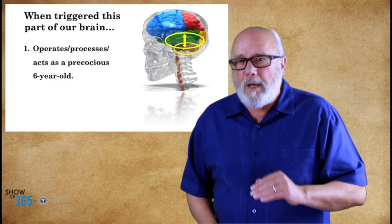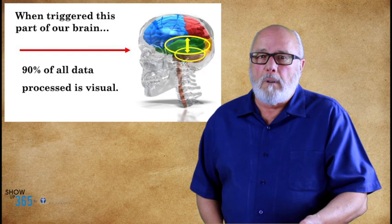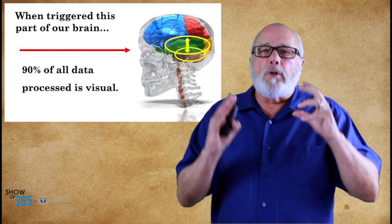When that part of the brain is triggered, and I've got both of them here, the mammalian and the reptilian brain are triggered, it operates, it acts like a precocious six-year-old or younger. 90% of all data that comes in goes straight to that area and is processed as visual information.